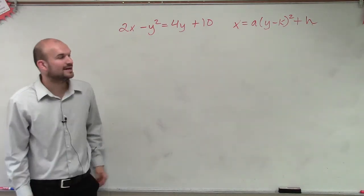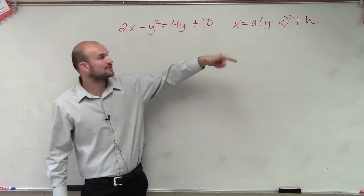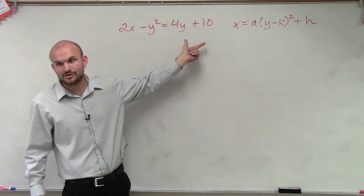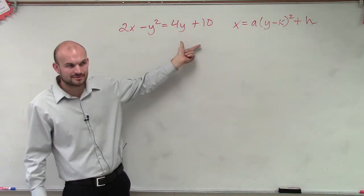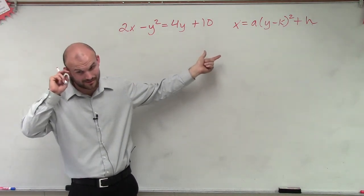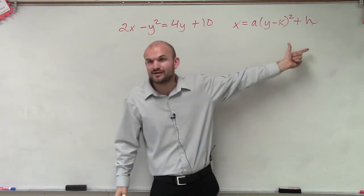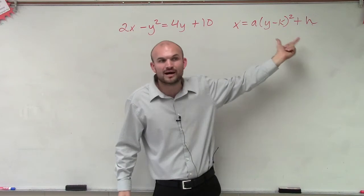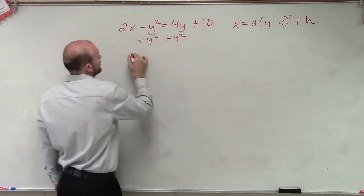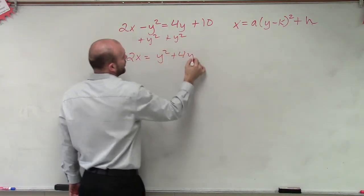So the first thing we need to do, though, is get this to that form, right? So again, do we have a binomial squared? No. So guess what? We're going to have to subtract some stuff, and then we're going to have to complete the square again, right? If we don't have a binomial squared, to put it in vertex form, we have to have a binomial squared. So let's add the y squared over to the other side. You can do 2x equals y squared plus 4y plus 10.